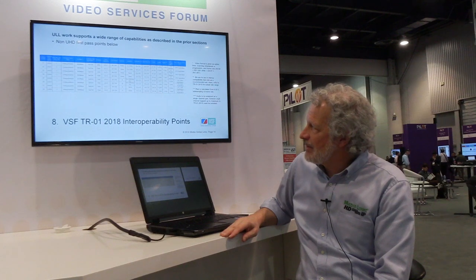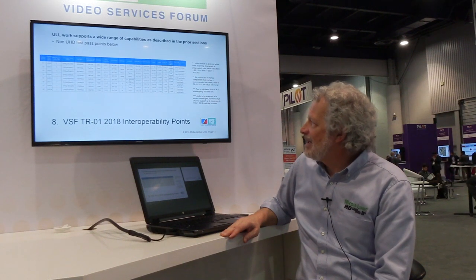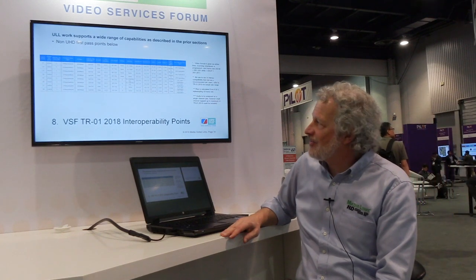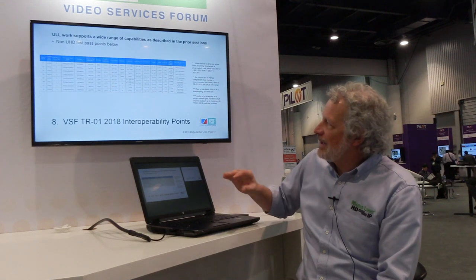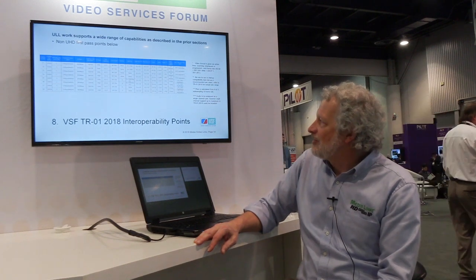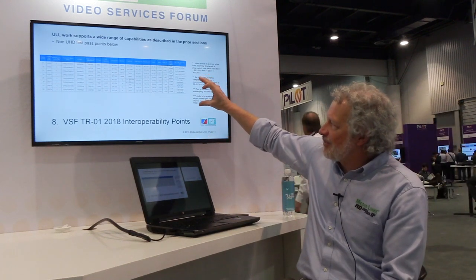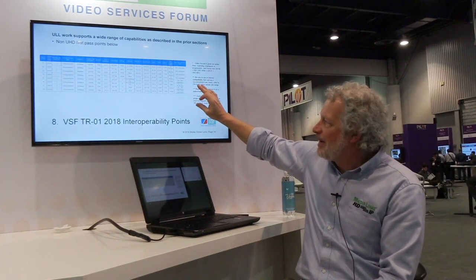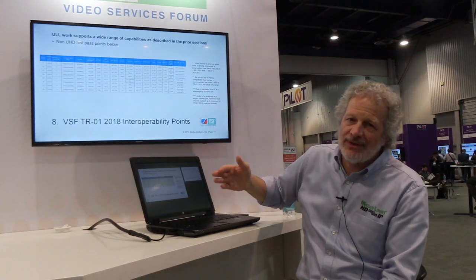This is a first pass at ULL applications, focused on 4K. We picked a common starting point: 4K either blocked or non-blocked, and either low latency or non-low latency, in both 59 and 50 frames per second. It's a short list, but we think these are the easiest versions for interoperability testing. We expect this list will grow as users become more familiar with 4K and 8K applications and look for more specific interoperability points.